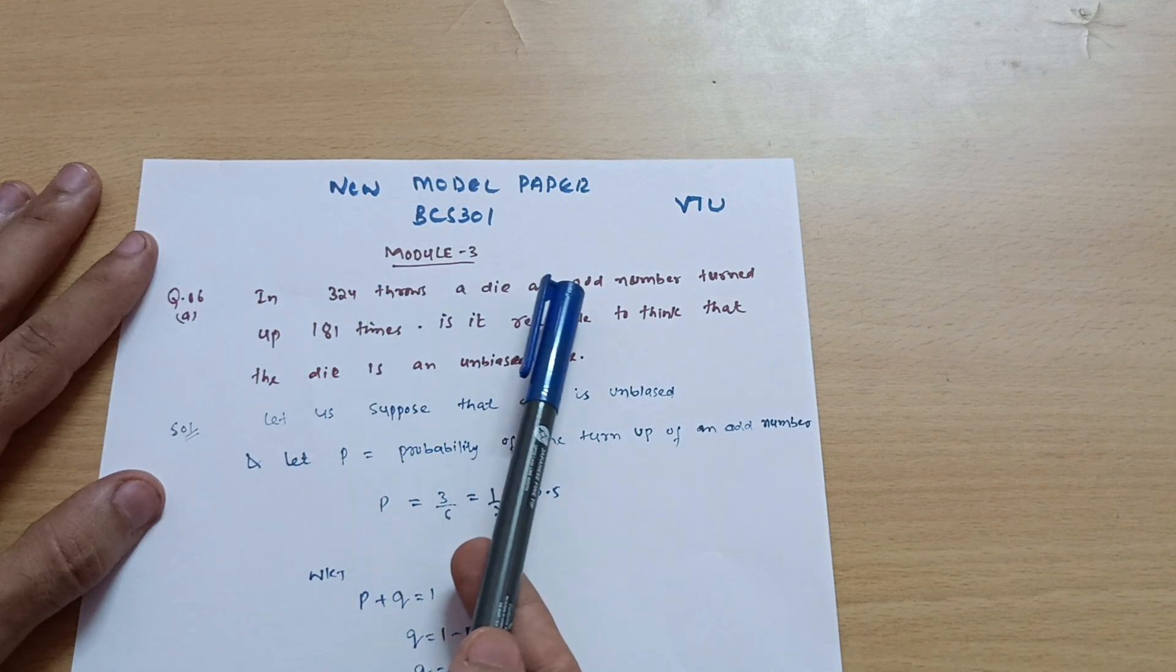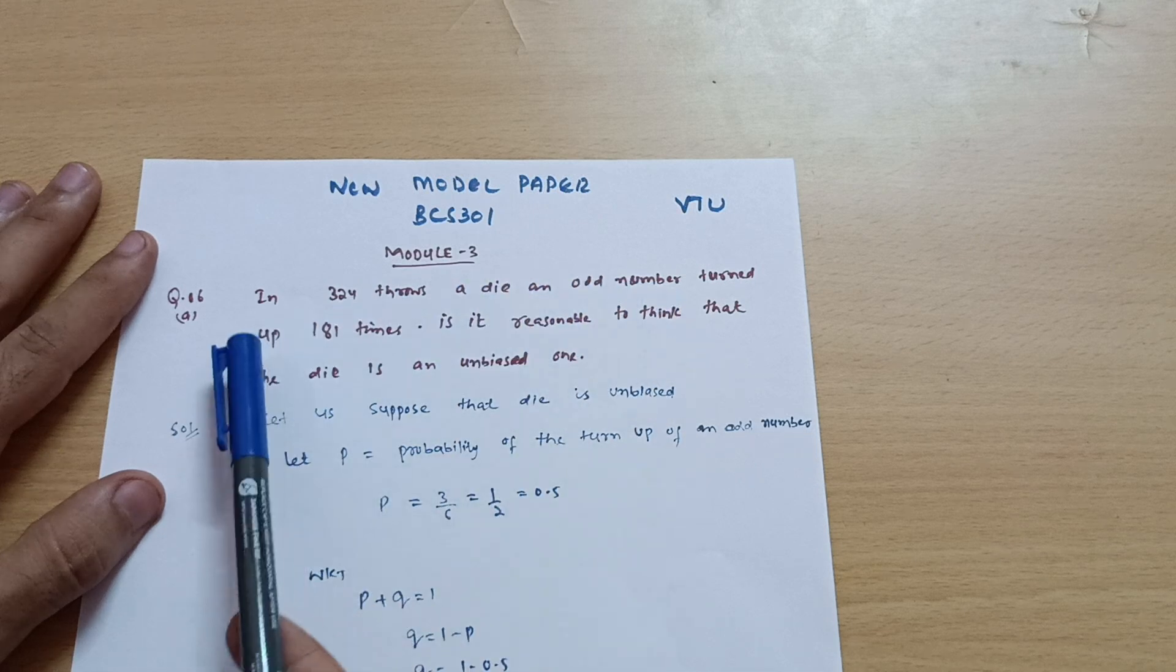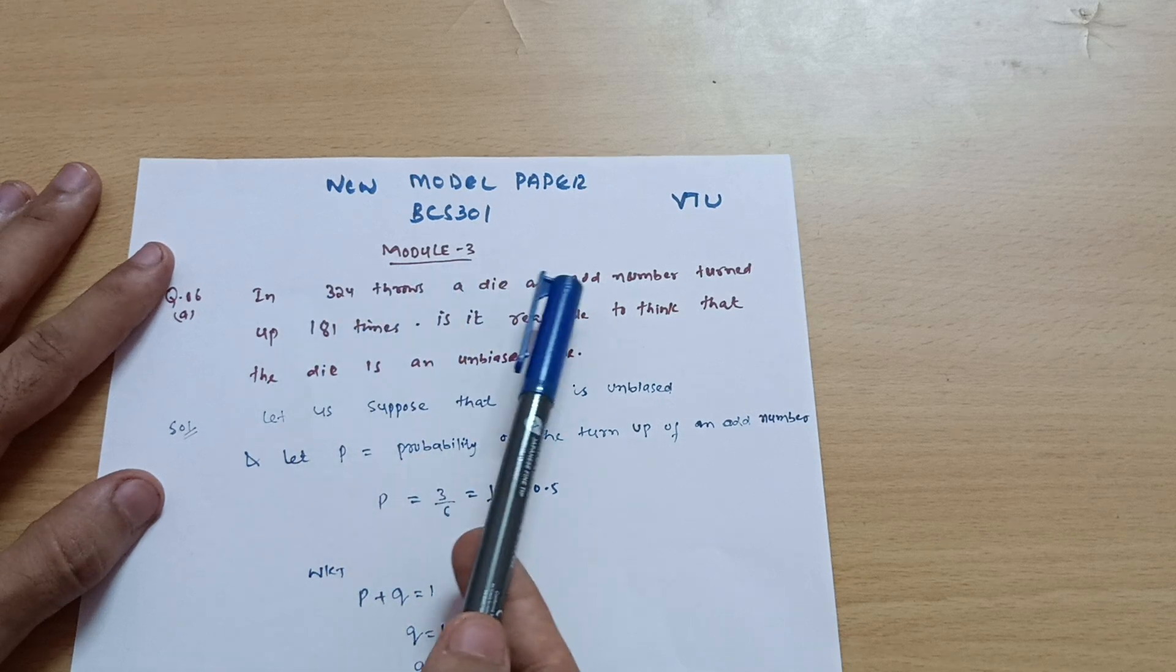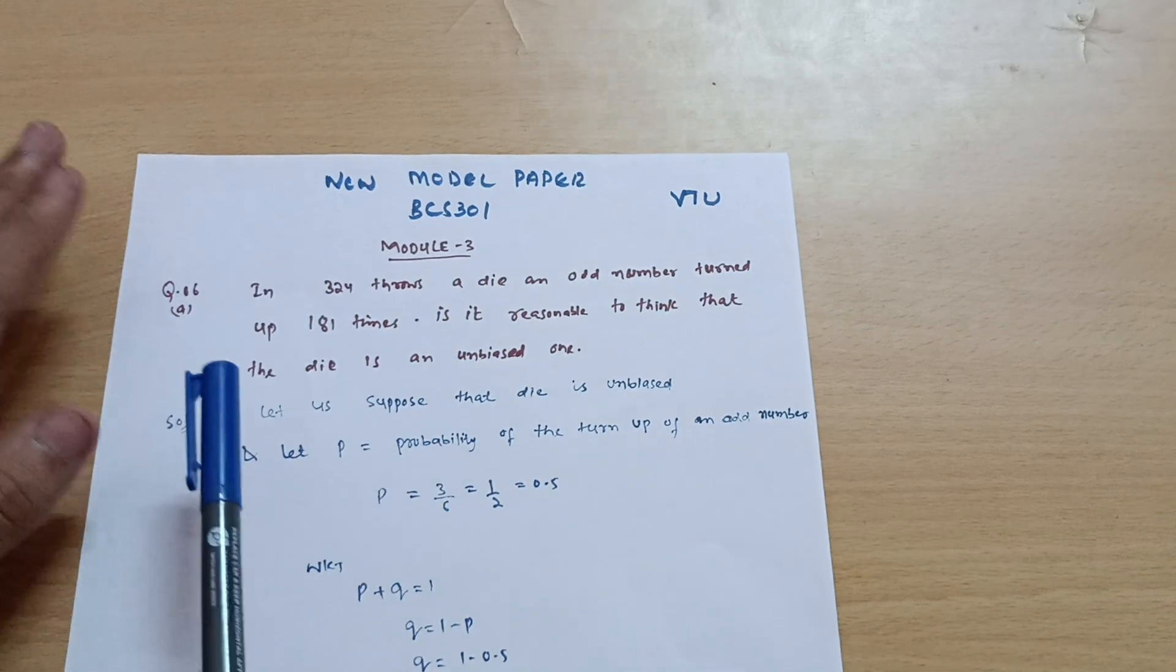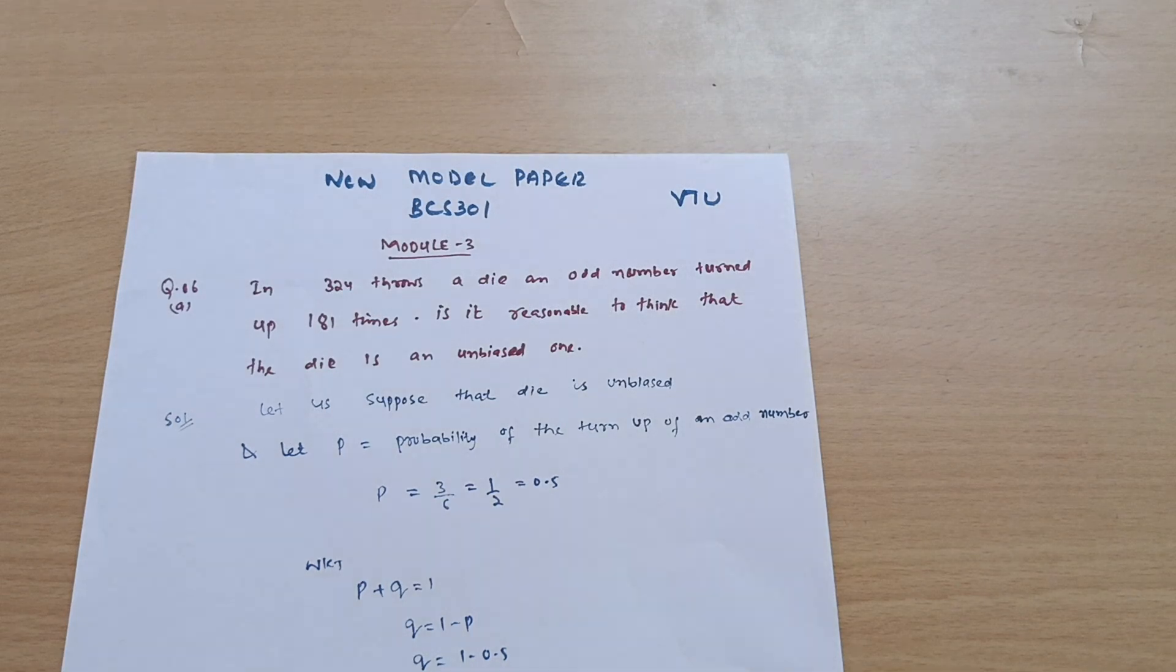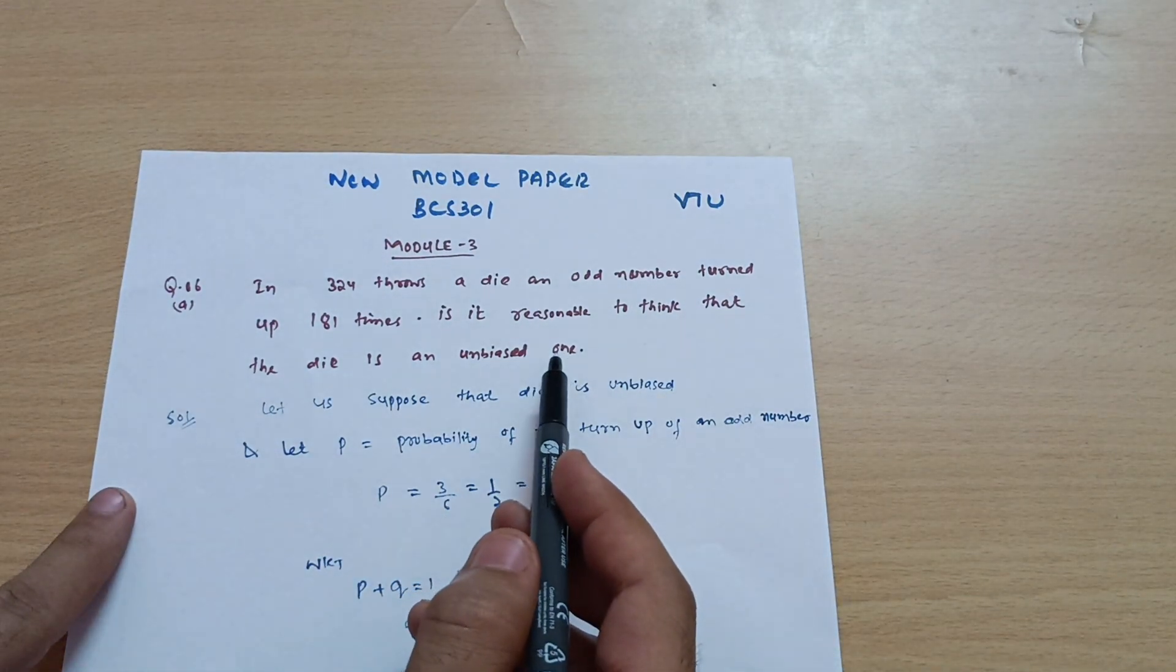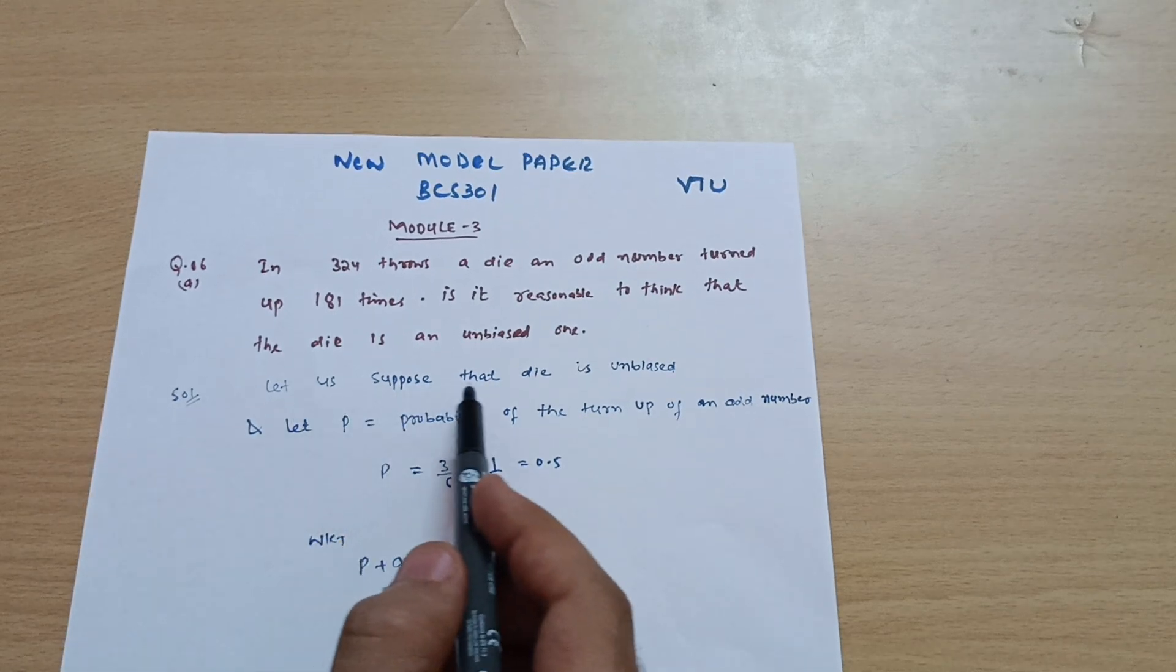The question states: A die is thrown 324 times and an odd number turned up 181 times. If a die is thrown 324 times, we are getting an odd number 181 times. It is based on the assumption randomly you are taking. Is it reasonable to think that the die is unbiased or biased?